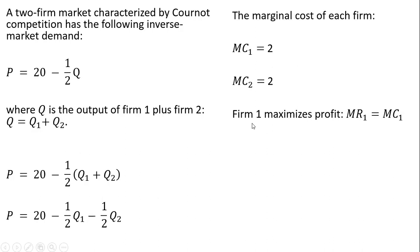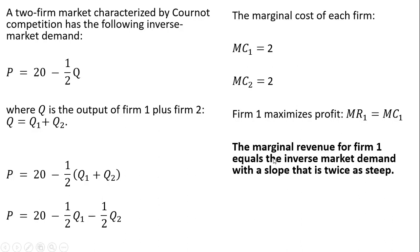So for firm 1, we want to maximize profit, and we're going to follow the golden rule of profit maximization, setting firm 1's marginal revenue equal to marginal cost. We already have firm 1's marginal cost. The hard part, which is actually not that hard, is to get firm 1's marginal revenue. And here's the key. The marginal revenue for firm 1 equals inverse market demand with a slope that is twice as steep. So here's the inverse market demand.